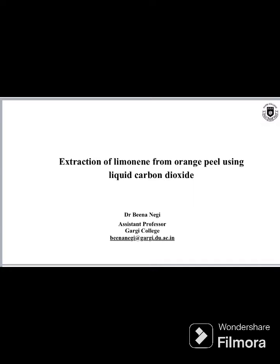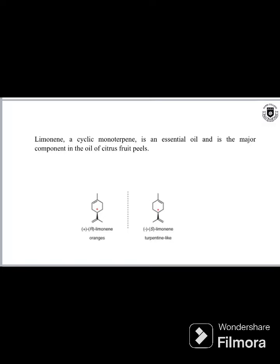Hello everyone. In this video we are going to see how to extract limonene from orange peel using liquid carbon dioxide. D-limonene is a cyclic monoterpene and a major component of citrus fruits. D-limonene is present in orange peel.